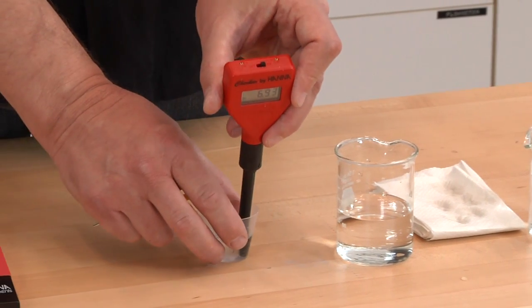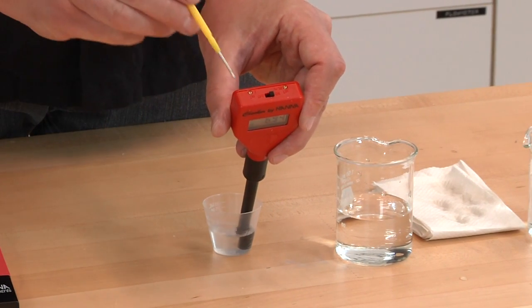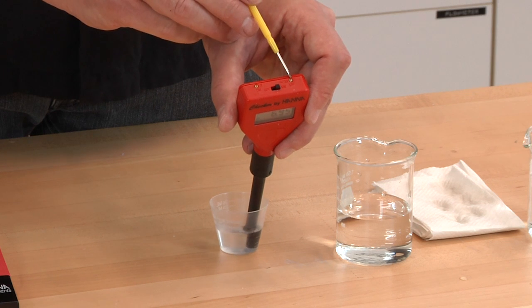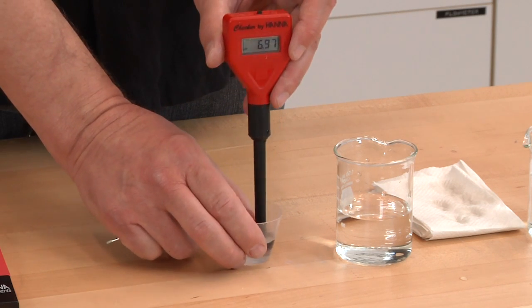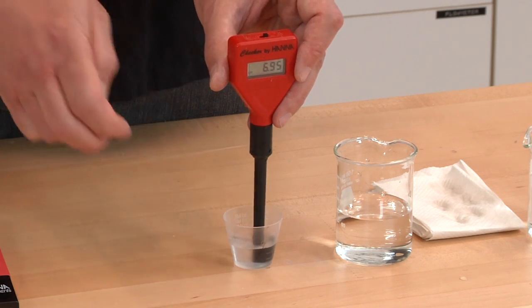This meter has two calibration screws, one for pH 7 and one for pH 10 or 4. Since we're working below a pH of 7, we'll be calibrating to the 4 solution.